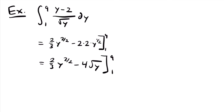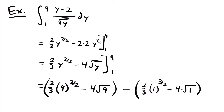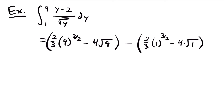Our next step is to plug in 9: two thirds times 9 to the three halves power minus 4 times the square root of 9. Then we subtract 1 plugged in: two thirds times 1 to the three halves power minus 4 times the square root of 1. Taking a value to the three halves power is the same as taking the square root of that value cubed. So 9 to the three halves power is the square root of 9 cubed, which is the square root of 729.